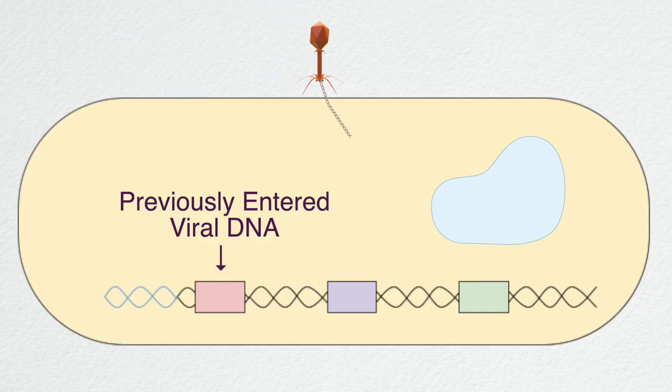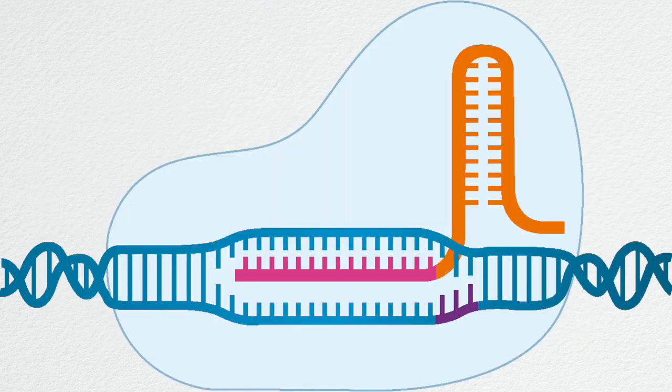When the same DNA is injected into the bacteria next time, the guide RNA and Cas9 protein will find the matching segment of DNA by unwinding the strand to cut and inactivate the viral DNA.